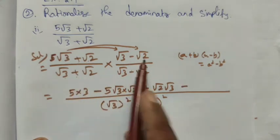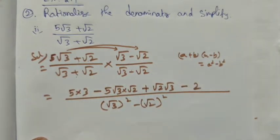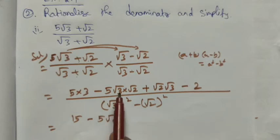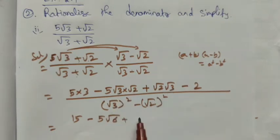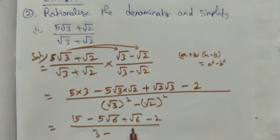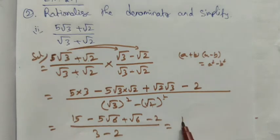Multiplying out: 5√3 × √3 = 15, and 5√3 × √2 = 5√6. Then √2 × √3 = √6, and √3 × √3 = 3. In the denominator, the root and square cancel: we get 3 - 2, which equals 1. So the numerator becomes 15 - 5√6 + √6, and 3 - 2 = 1 in denominator.